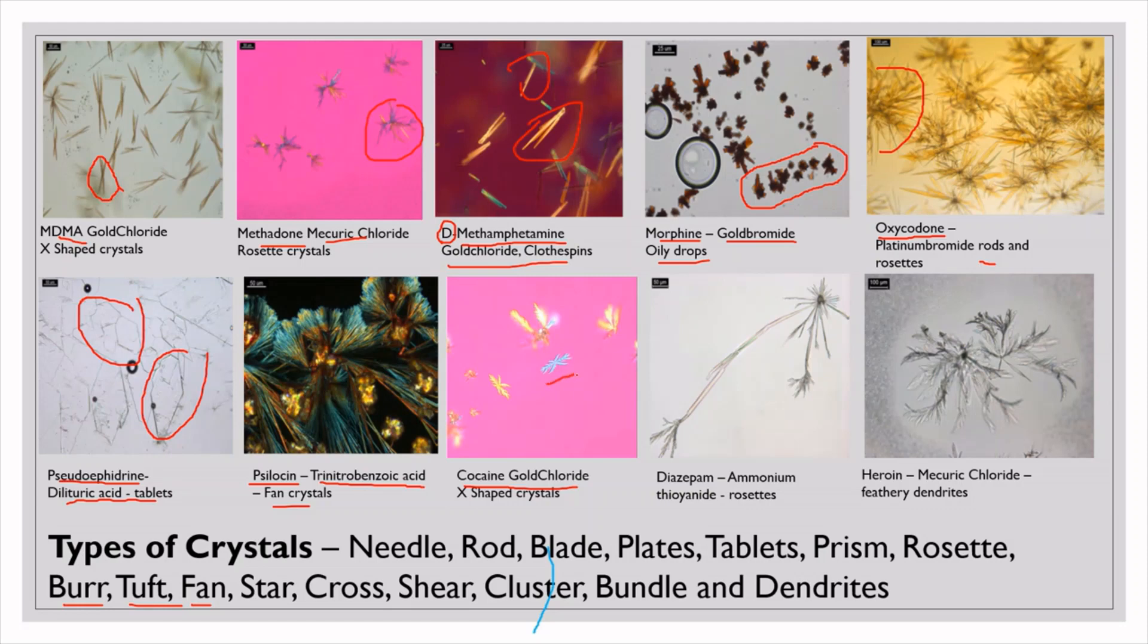Coming to cocaine, using gold chloride - gold chloride is already seen in D-methamphetamine. Same reagent is again used for cocaine. In methamphetamine we are going to see clothespins, but in cocaine we are going to see X-shaped crystals. These crystals are very unique, very good design will be there. If you see this particular image, I am going to give you the link in the description. Just click on the link, you will be going into the PDF file, that is the report of this microcrystalline test, so that you will be understanding all microcrystalline tests.